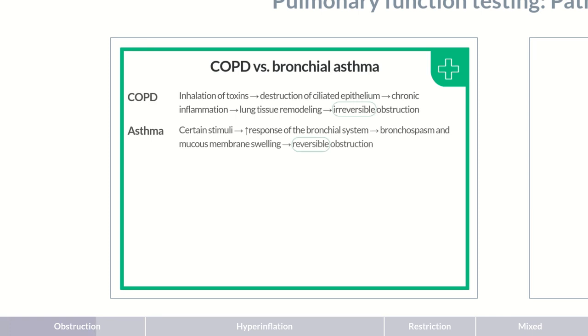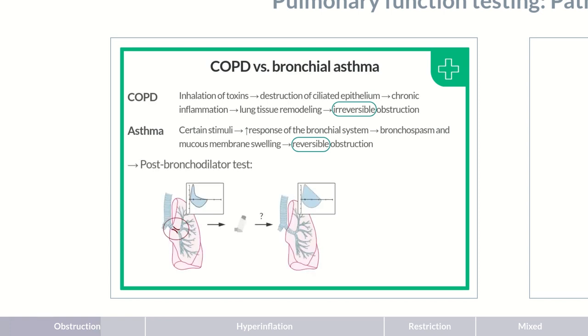This reversibility can be used as a criterion for differentiating between the two diseases. To do so, a post-bronchodilator test is performed. The patient is administered a fast-acting bronchodilator. After administration, the bronchi are examined for dilation and whether the drug improves pulmonary function. If that's the case, airway obstruction is reversible, and the diagnosis is most likely asthma. If the values don't change, the irreversible obstruction is an indication of chronic obstructive pulmonary disease.